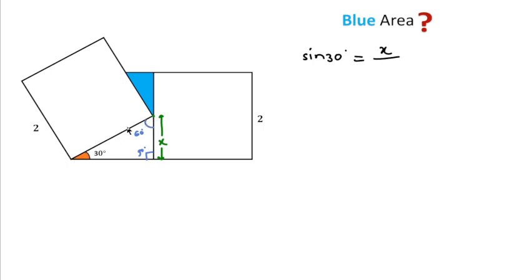And sin 30 degrees is equal to 1/2, which will be equal to x/2. The 2s get cancelled, this means x equals 1. So x equals 1, and the side length of this square is equal to 2. This means the other part is also equal to 1. This means this is a middle point actually.